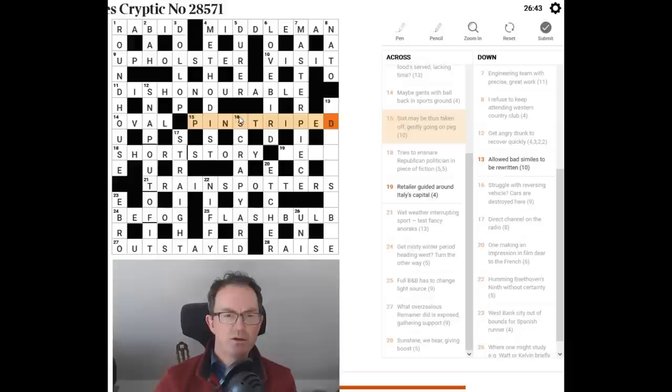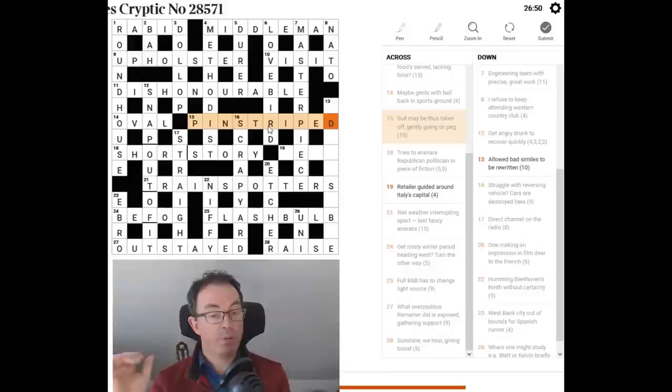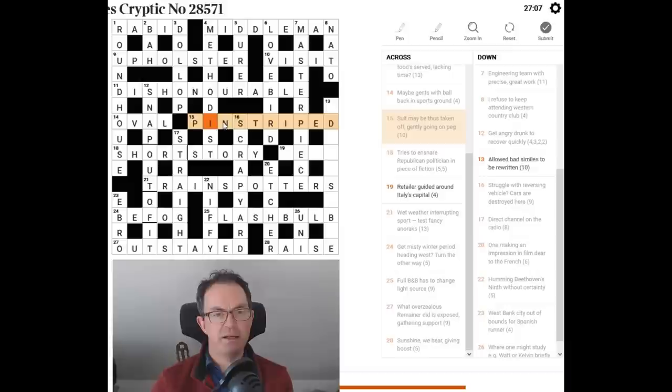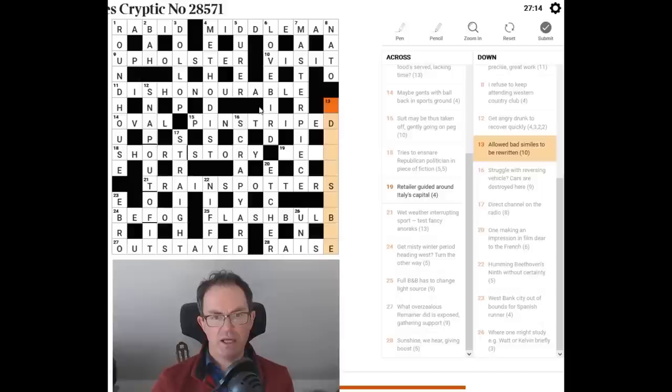so taken off is stripped, gently going, well, if you see P on a piano score, it's, I think it's, is it pianissimo or is it piano, it's one or other, and it means gently, so we have to remove one of the P's from the word stripped, and that gives us striped, and we put all of that on a word that means peg, and a peg and a pin, I think, are synonymous, so that gives us pinstriped, which must be the answer.